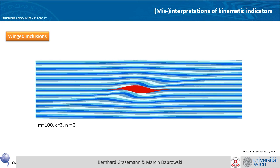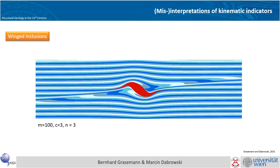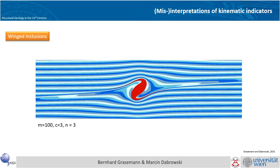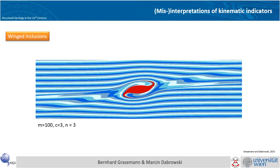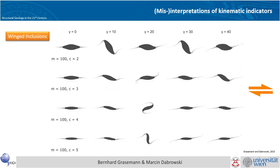The pinch-and-swell object is 100 times harder than the matrix at the beginning, with apparent viscosity and stress exponent n=3. You see the deformation in the matrix, and now the trailing wing flips over and becomes the leading wing.